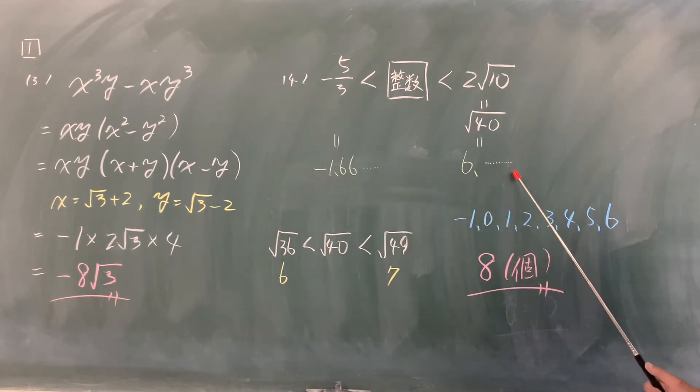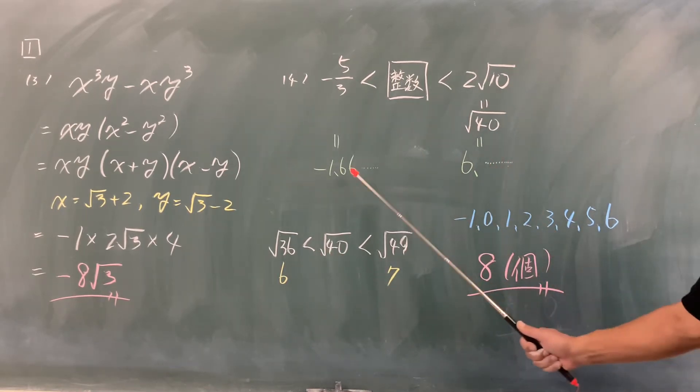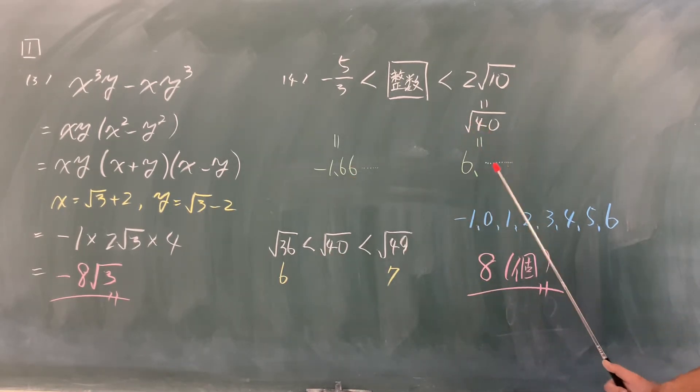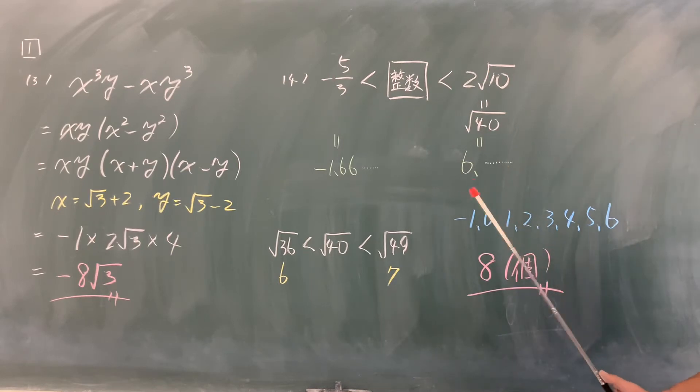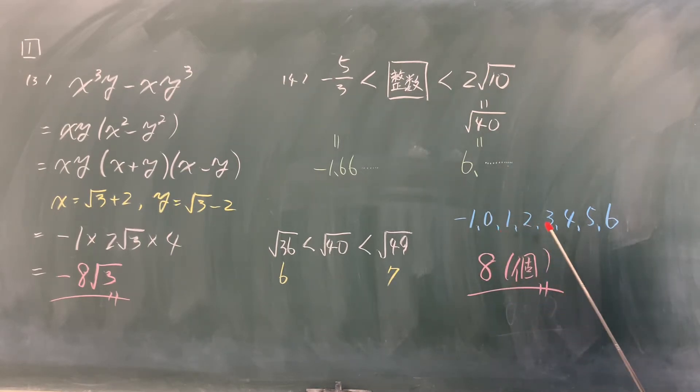2√10というのは√40です。√40というのは√36よりは大きいし、√49よりは小さいので、6より大きくて7より小さい、6点いくつということです。この間に入る整数は、-1、0、1、2、3、4、5、6の8個です。